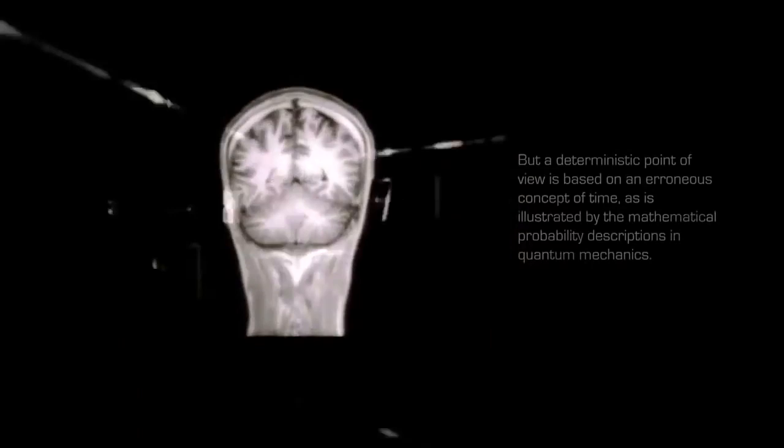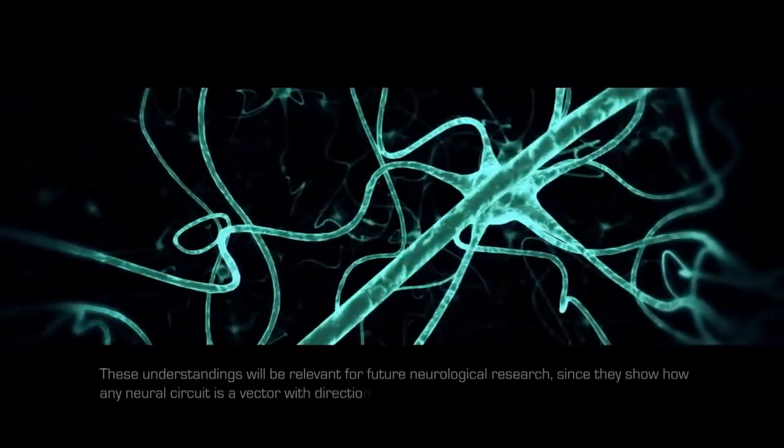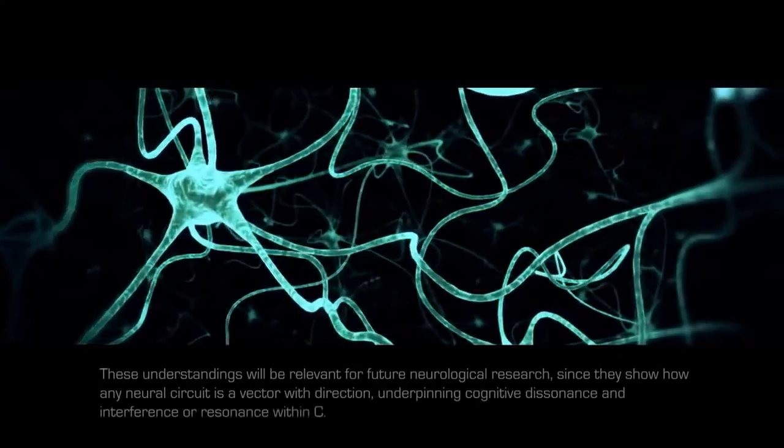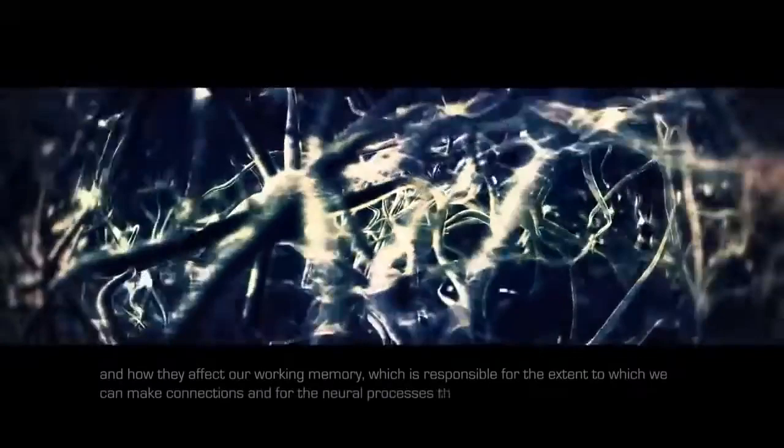These understandings will be relevant for future neurological research, since they show how any neural circuit is a vector with direction, underpinning cognitive dissonance and interference or resonance within C. The ability to understand and consciously alter these directions, acquired through billions of years of evolution, confirms how important our belief systems are in expanding our awareness, and how they affect our working memory, which is responsible for the extent to which we can make connections and for the neural processes that create meaning. It also explains how artificial awareness will require a network of independent processors instead of a linear sequence of complex algorithms.